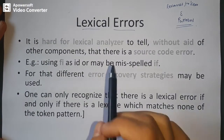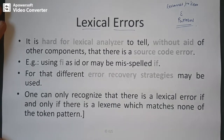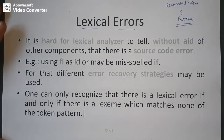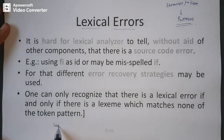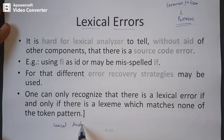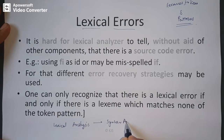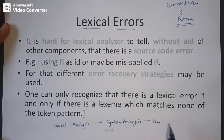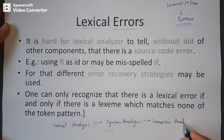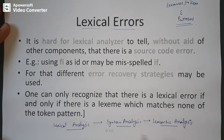Compiler structure: we start with lexical analysis, then move to syntax analysis and the parser, and finally pass it to semantic analysis. Every analysis phase in the compiler can generate its own type of error.